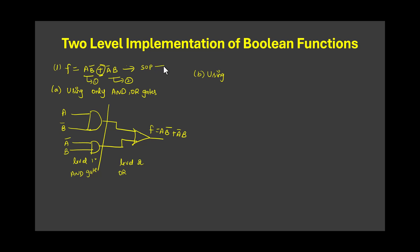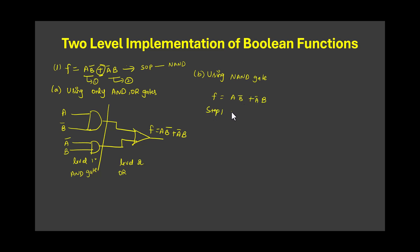Now for the second implementation, we are going to use universal gates. Even though this is a SOP expression, I am going to implement it using only NAND gates. To implement this logical expression with NAND gates, I first write the logical expression as it is: AB̄ + ĀB.